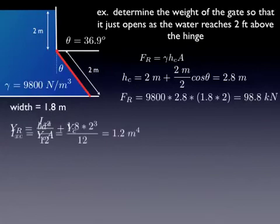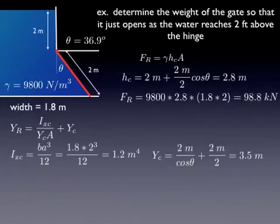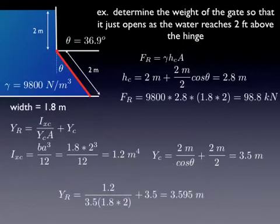Where it acts, we use that equation. Moment of inertia, this is a rectangle, so we use the rectangle equation. YC is the distance in the direction of the planar surface from the centroid to the water surface. Again, the trigonometry is a little messy, but to get from the water surface to the hinge, we use 2 meters divided by the cosine theta, and then to get from the hinge to the center of the gate, it's 1 meter, half the total length of the gate. We can plug that in and get a YR of 3.595, which is a little bit lower than the distance to the centroid.